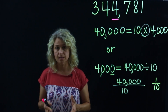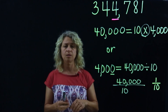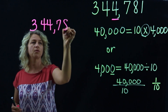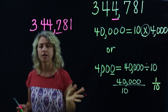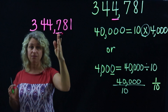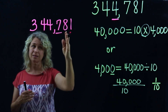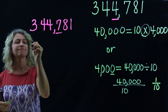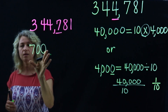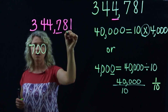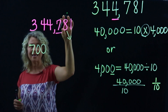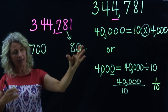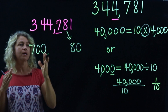Now let's take a look at a non-example. Using the same number — three hundred forty-four thousand seven hundred eighty-one — the question is: is this seven ten times the value of the digit to its right? Let's see. The value of the seven is seven hundred. The value of the eight is eighty. Is seven hundred ten times eighty? No.